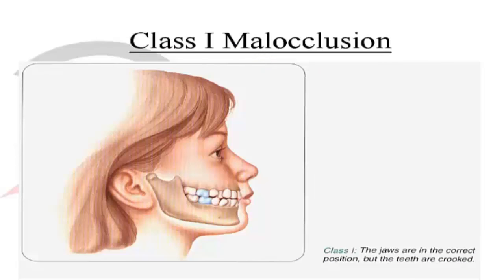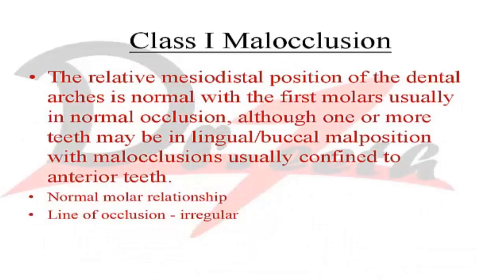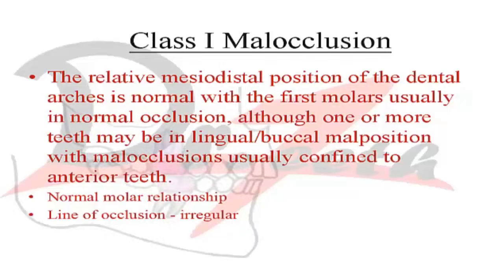Class 1 malocclusion is a malocclusion in which the molar relationship will be normal — that is, the mesiobuccal cusp of the upper first permanent molar occludes in the buccal groove of the mandibular first molar — but there will be either crowding, rotations, or the teeth are not in their proper position. Usually in these cases, there is a normal molar relationship and normal skeletal relationship, but the line of occlusion is irregular or deranged.